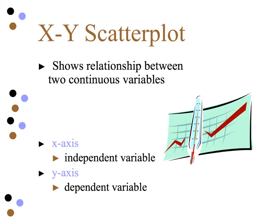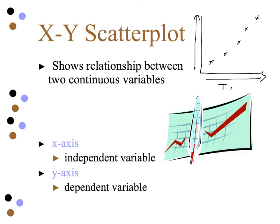The next one is an XY scatter plot. An XY scatter plot is simply where you're putting points or dots on your axes. In this case, this uses two continuous variables — meaning either axis could be any number between any of the points. For example, going back to time and height of a plant, you'd have time here and height here. Those are both numerical, and the time could be any time, and the height could be any height. Therefore those are two continuous variables, with the x-axis as the independent variable and the y-axis as the dependent variable.